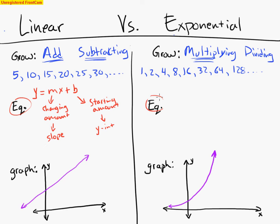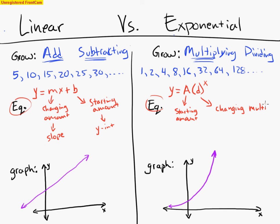For the exponential equation, I have to be multiplying, so I'm going to have a different equation — this is the new one for us. It's going to be a times d to the x. d is what I'm multiplying by every single time. So a is my starting amount, and d is the changing multiplier. The starting amount is still my y-intercept, but this changing multiplier is not the slope — we have to be careful about that.